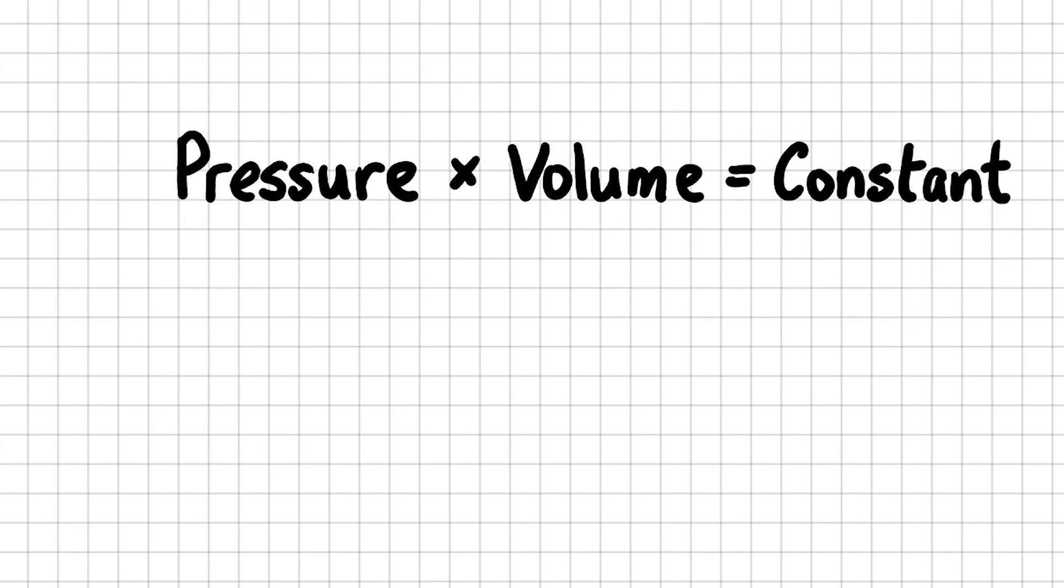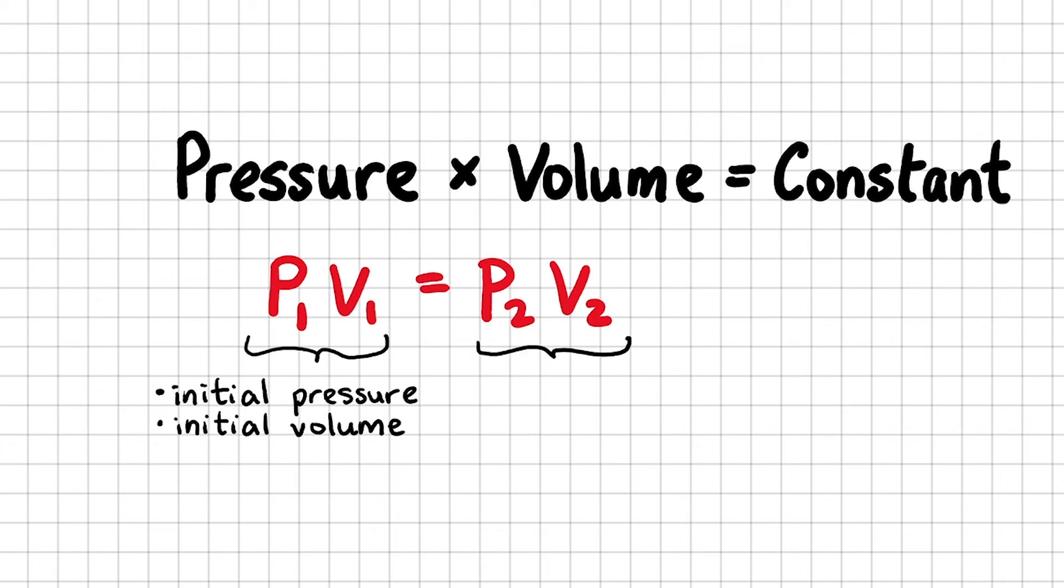You can also write it like this. P1 V1 is equal to P2 V2. These are the initial pressure and initial volume. On the right-hand side, this is the pressure of the same gas, but that is after you've changed the volume of the container to this new volume.